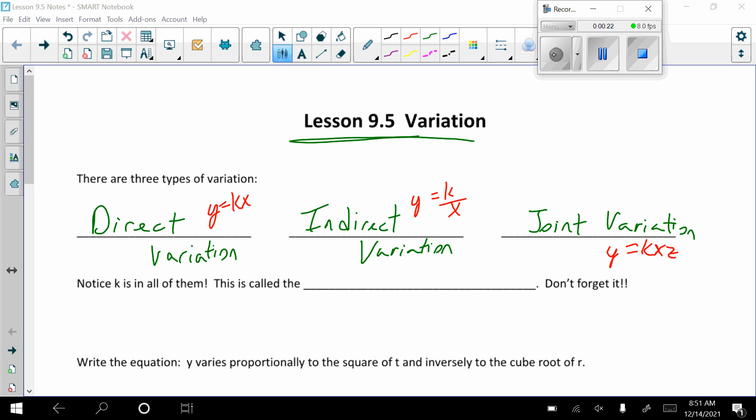Notice how all the equations have K in it. K is called the constant of variation. And sometimes it's easy to leave out, so just make sure that you don't do that. It's always going to be part of every single equation.